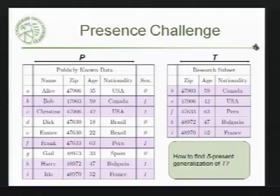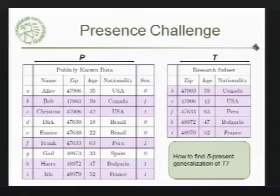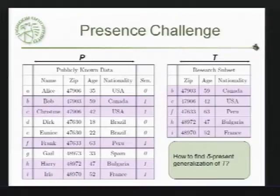Let's look at an example of a data set where we have some publicly known data, and for illustration purposes we note whether someone is in the data set. Right now you can see it's pretty easy to match people up. We want to anonymize T to the point where someone who has P wouldn't be able to figure out if they're in that data set T.